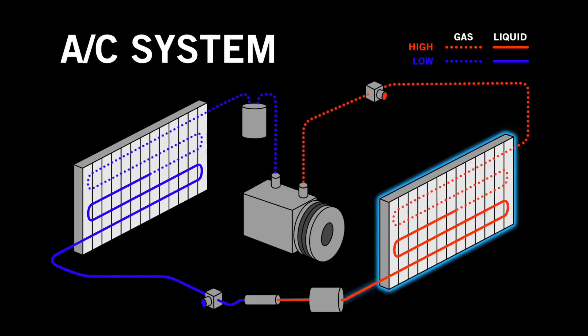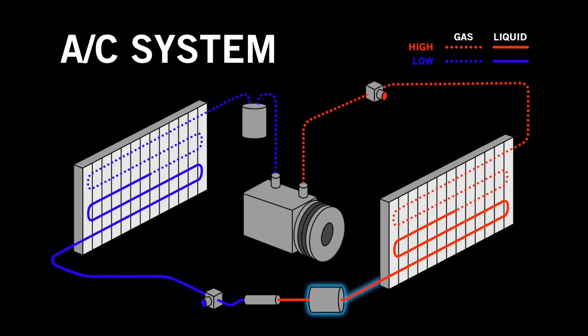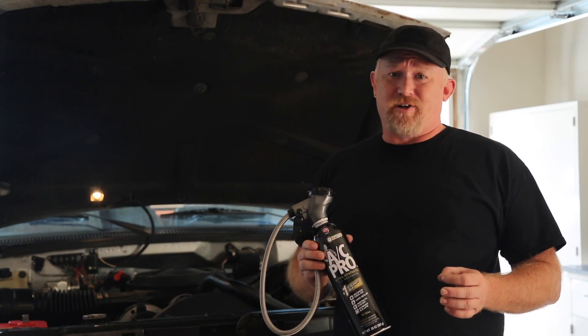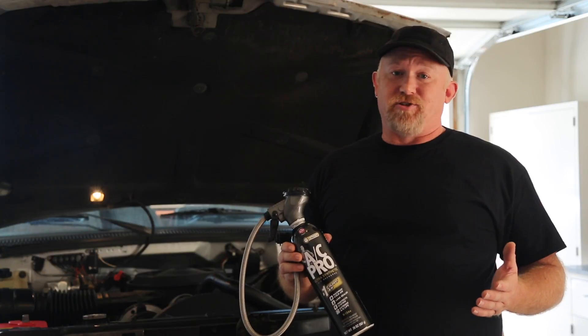As the refrigerant moves out of the condenser, the liquid goes through the receiver dryer. The receiver dryer is a reservoir that removes any water currently in the system. This is important because water in the system could freeze and cause a lot of damage to internal parts.